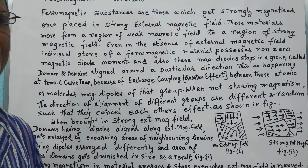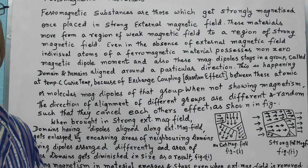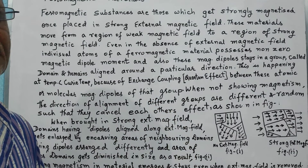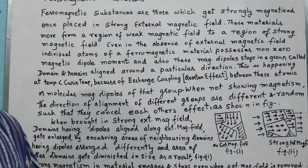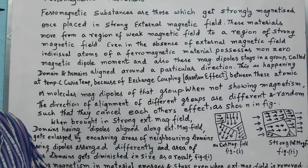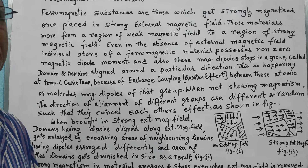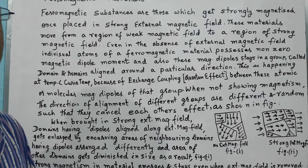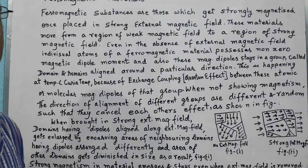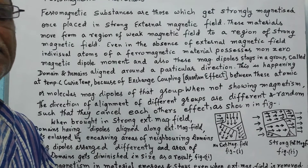When the ferromagnetic material is brought into a strong external magnetic field — and note that a weak external magnetic field may not affect it — the domains for which the magnetic dipoles are arranged along the external magnetic field grow in size by encroaching on the domain area of neighboring domains, which are not aligned along the direction of the external magnetic field.